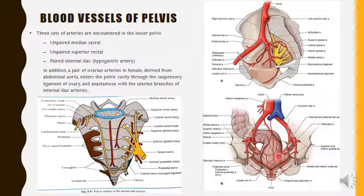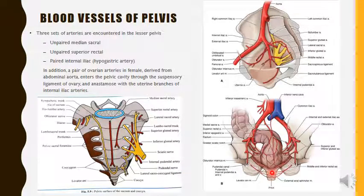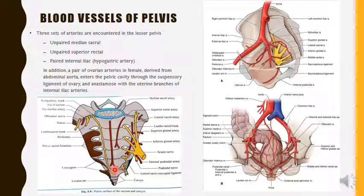In its course, the median sacral artery supplies the back of the rectum and the tissues in the post-rectal space. It also provides spinal branches which enter the pelvic sacral foramen and supply the contents of the sacral canal. The artery terminates near the coccyx, which contains numerous arteriovenous anastomoses.